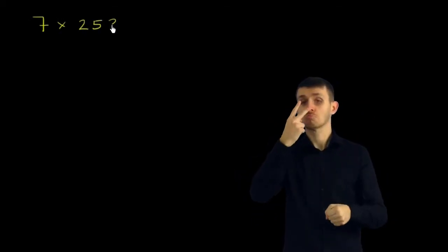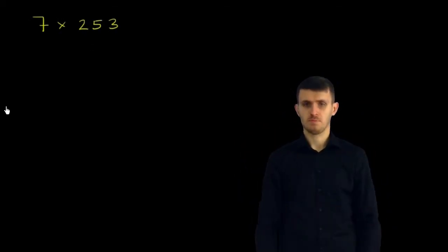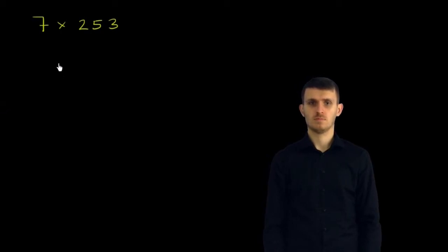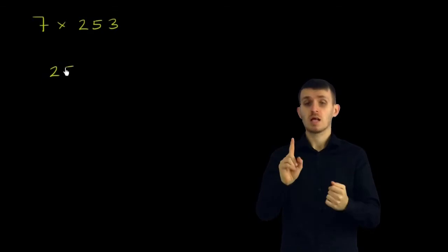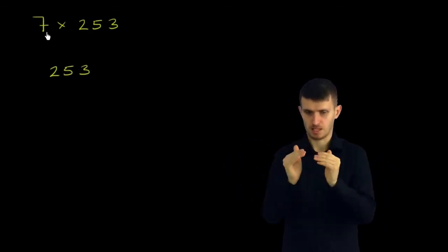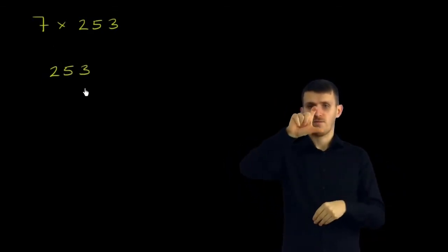Let's multiply 7 times 253 and see what we get. So just like in the last example, what I like to do is I like to rewrite the largest number first. So that's 253.